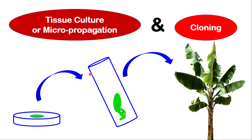Tissue culture, otherwise called micropropagation, and cloning are kind of similar, but there is a simple difference. In tissue culture, you use a tissue of the organism. Whereas in cloning, you use a single cell and develop that single cell into an entire organism.